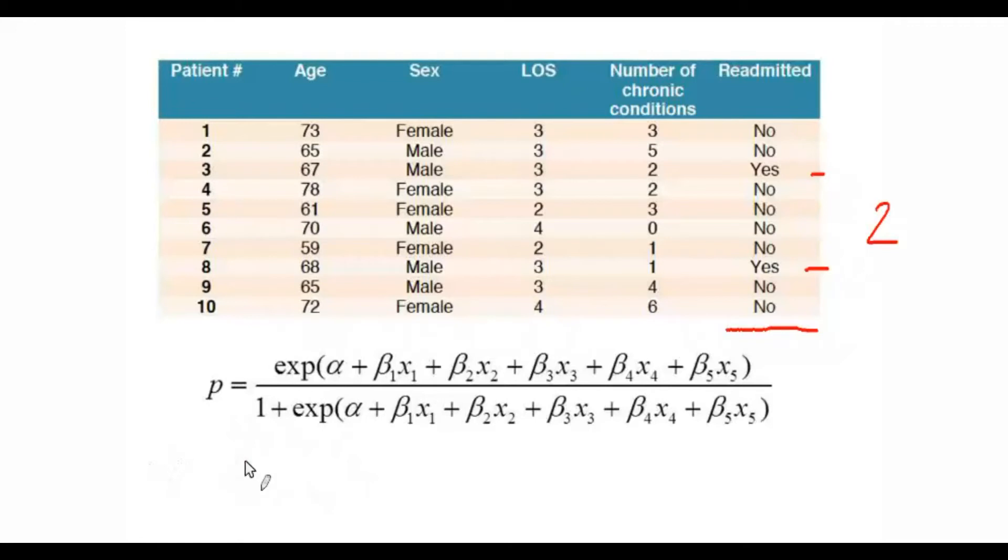So when we do our observed-to-expected ratio, the numerator will be 2. Now we need to figure out what the denominator is going to be.